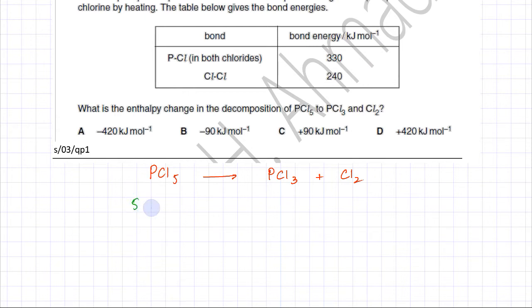Five PCl bonds are broken. These are the bonds that would be broken in this reaction.